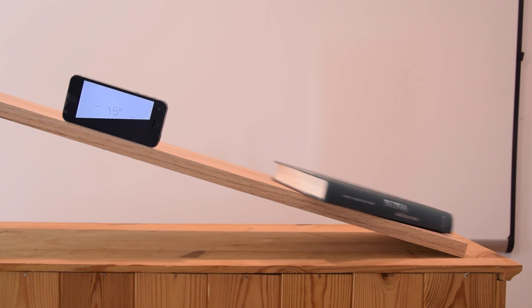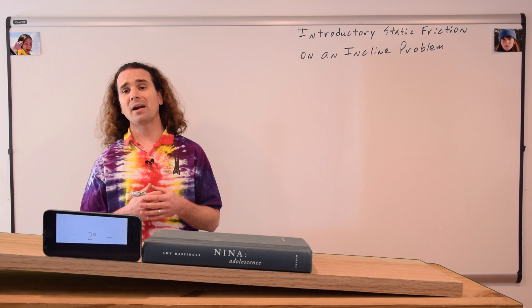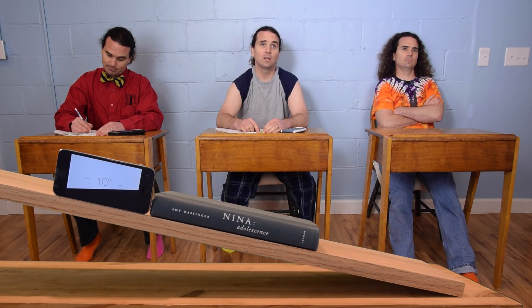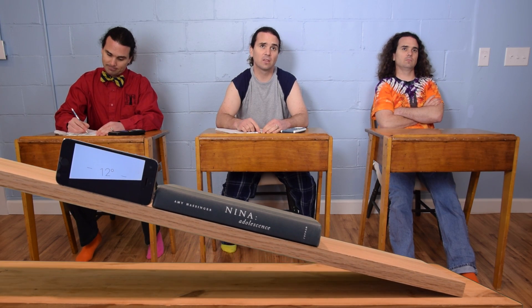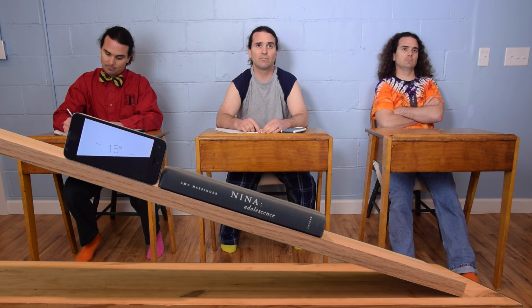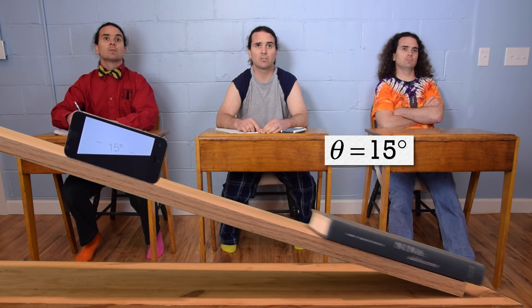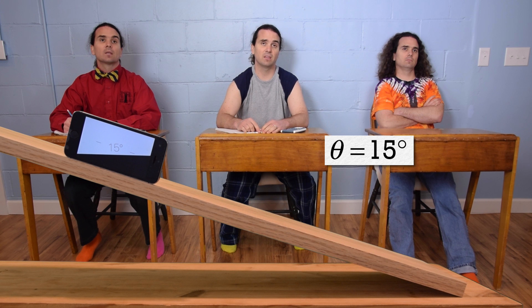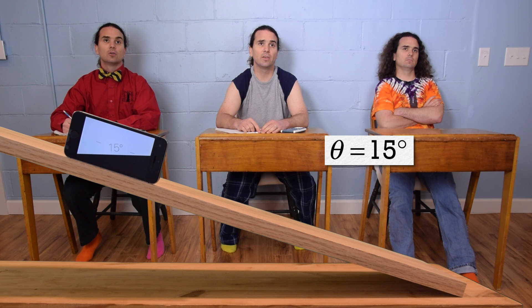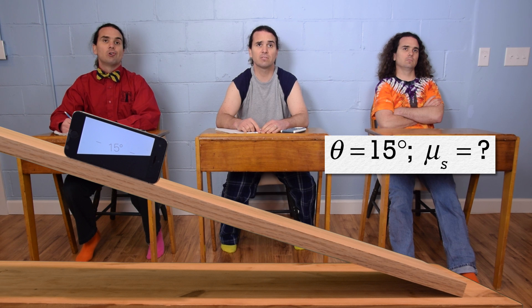Mr. P.: Bobby, what are our known values? Bobby: It looks like the book starts to slide when the incline angle is 15 degrees. I think that's it. Mr. P.: And what exactly are we solving for? The coefficient of static friction equals question mark.